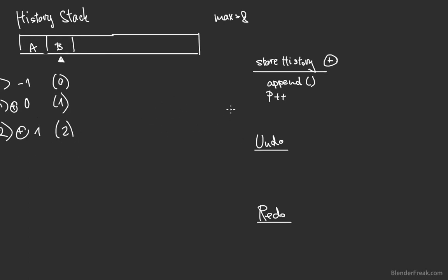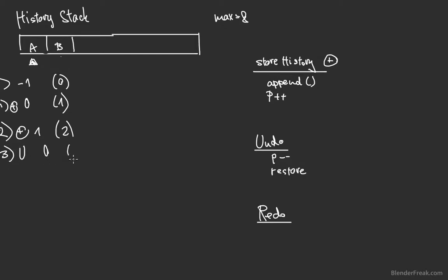If we do an undo operation, we basically take our pointer, decrease it, and restore the state. So we move the pointer back and restore the A state. After undo, the pointer is going to be zero and the length is going to be two.